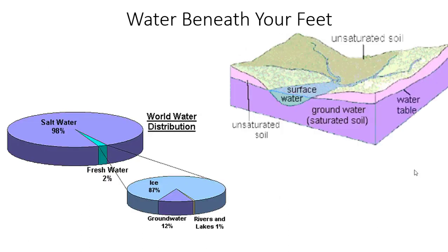So groundwater is all of the water that's underground. The way it works is surface water, rainfall, anything like that can percolate through the ground, work its way down through the soil, through the rocks, through the clay, and creates a water table. A lot of people — we're lucky, we live in Indiana — we have a very high water table.